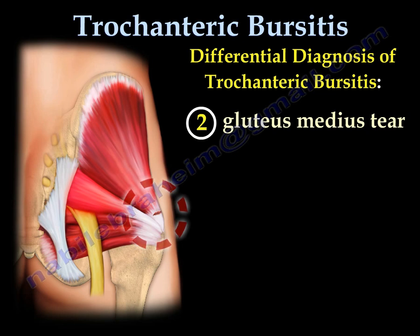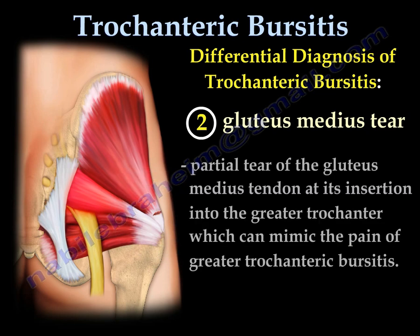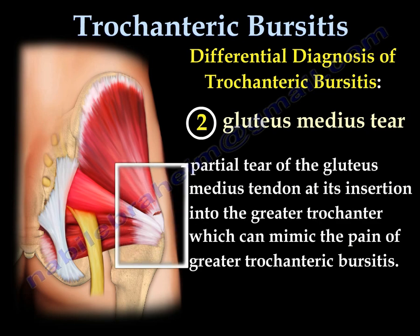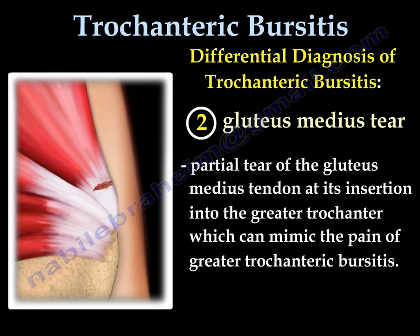The second differential diagnosis is a gluteus medius tear. A partial tear of the gluteus medius tendon at its insertion into the greater trochanter can mimic the pain of greater trochanter bursitis.